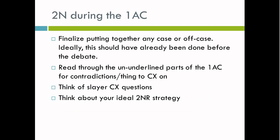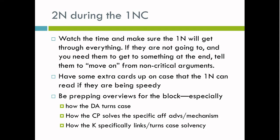What does the 2N do during the 1AC? I like to finalize putting together any case or off-case — ideally this is done before the debate. I like to read through the un-underlined parts of the 1AC for contradictions or things to cross-ex on. I think of slayer cross-ex questions and I also think about my ideal 2N strategy based on what the aff is.